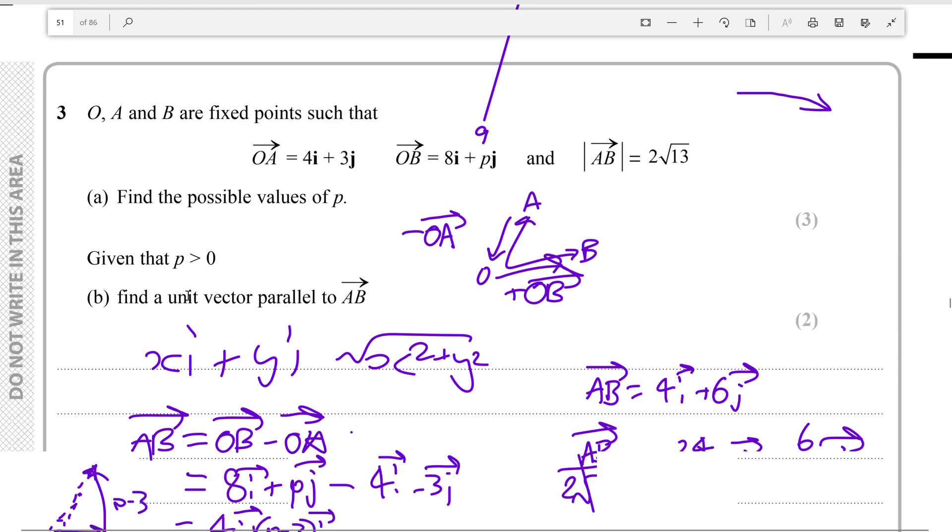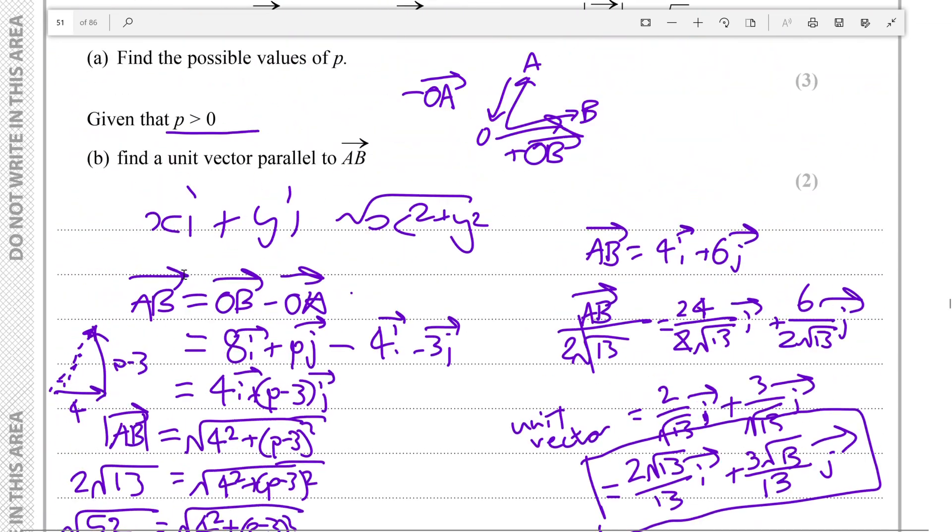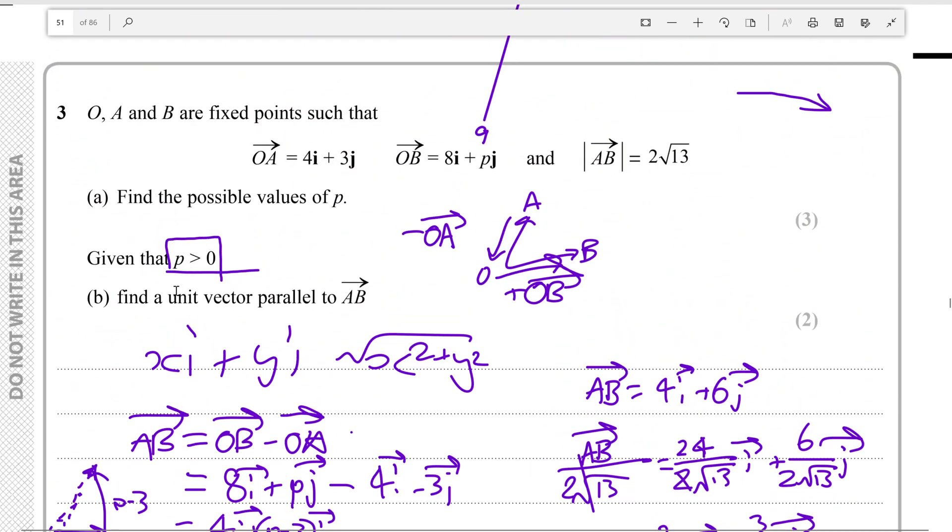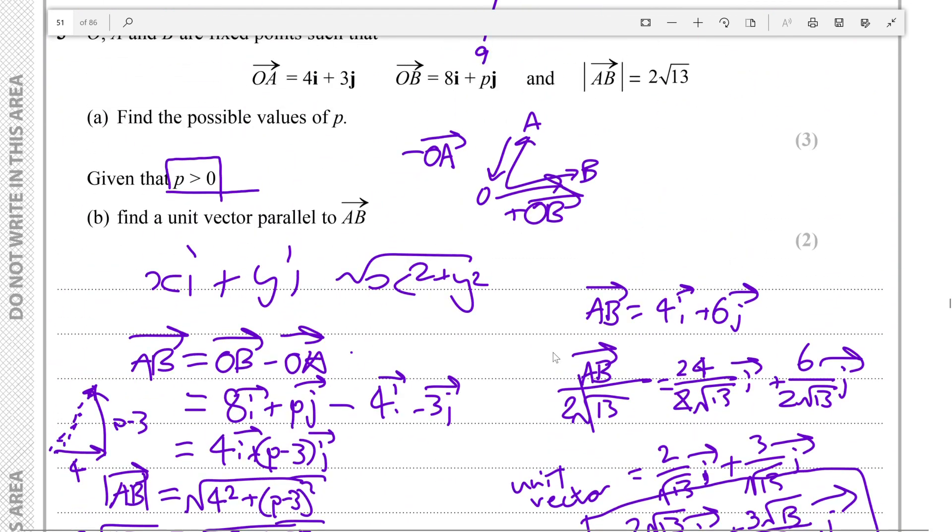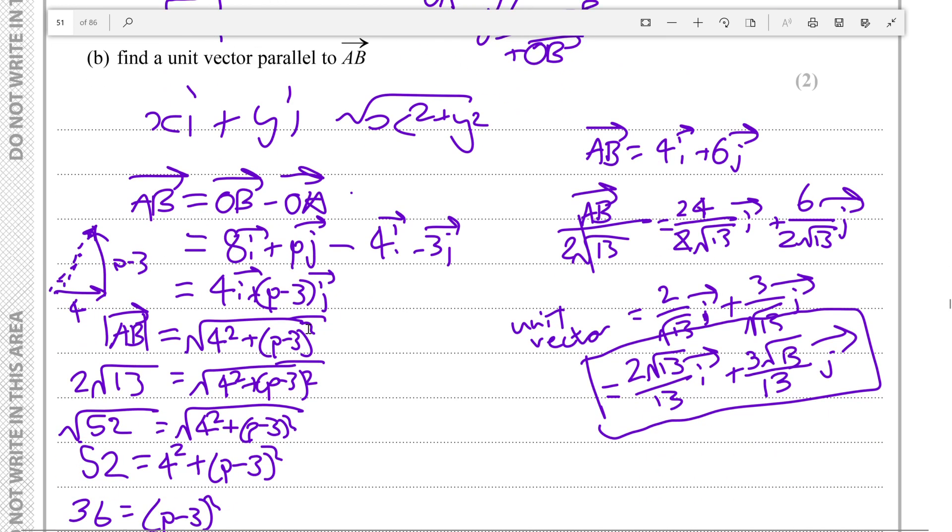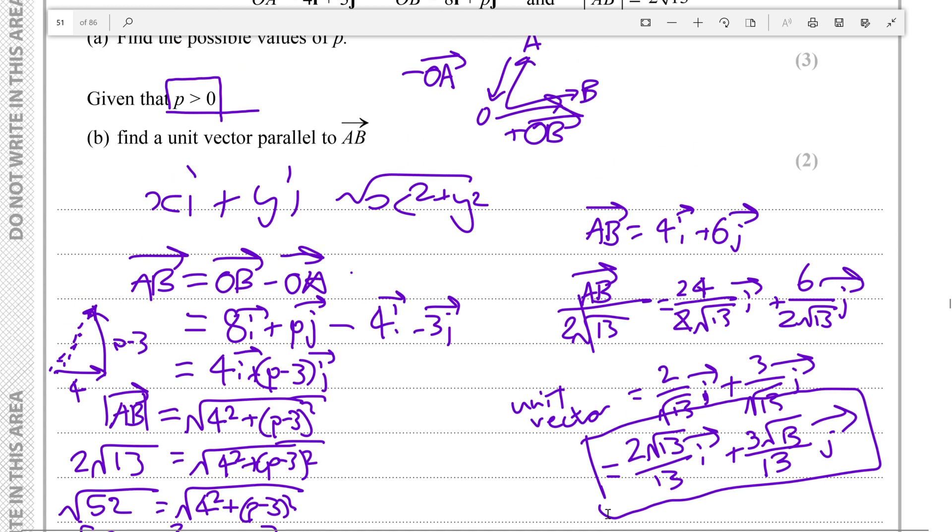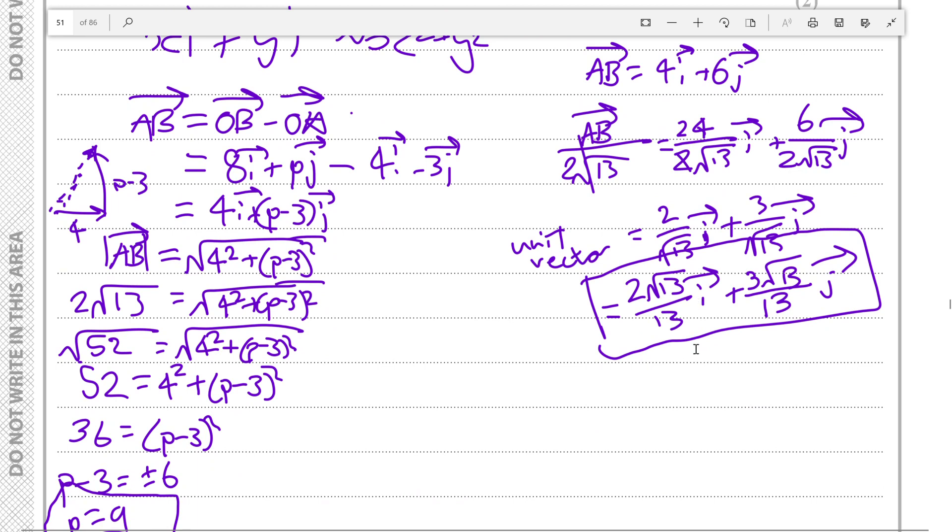We looked at the question and read that p is greater than 0, because you must really pay attention when it says given that something is greater than something, because what it's doing normally is eliminating other possible answers that you might have used in the next part of the question. And we know that p must be equal to 9 in the next question. And since it's equal to 9, and we worked out before that AB was 4i plus (p minus 3)j, p would be 9, 9 minus 3 would be 6. We find AB is 4i plus 6j, and then we divide by its own magnitude to get a magnitude of 1 for a unit vector, so it would be 2 root 13 over 13 i and 3 root 13 over 13 j.